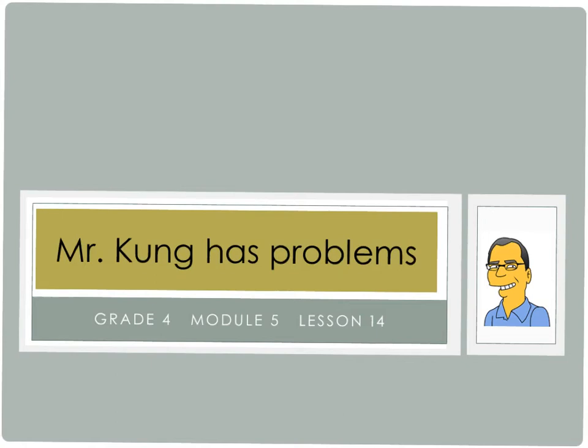Hello, and welcome to another episode of Mr. Kung Has Problems. Today we're working on Module 5, Lesson 14, and we're going to be finding common units or number of units to compare two different fractions. I'm going to do a few problems from the homework tonight. There are a lot of problems spread across these six different problems with all these sub-problems. I'm not going to do tons of them for you, but I'd be happy to do about three of them to help you out with tonight's homework.